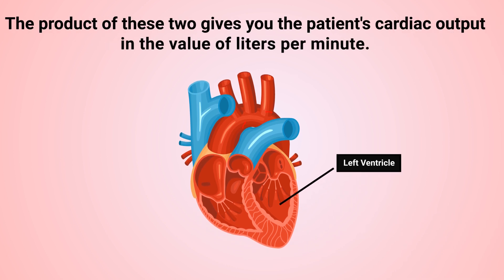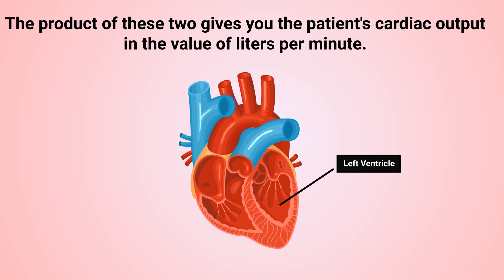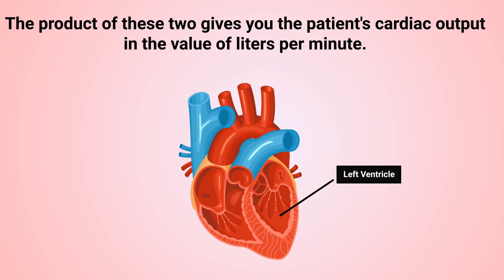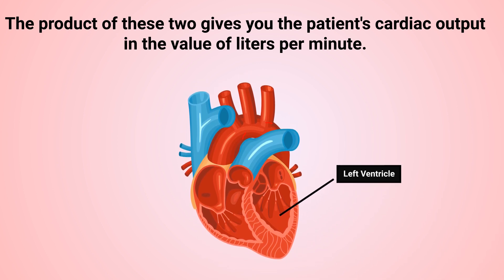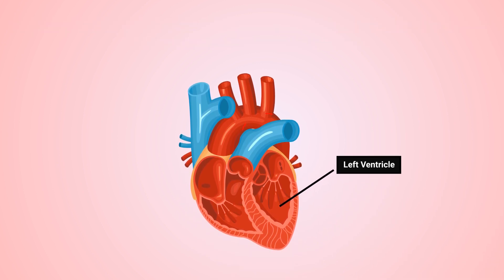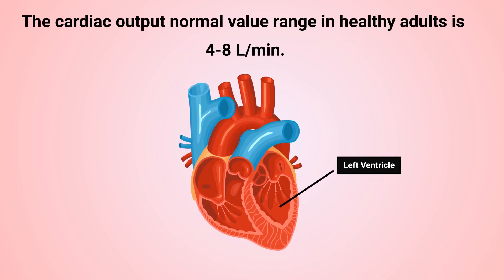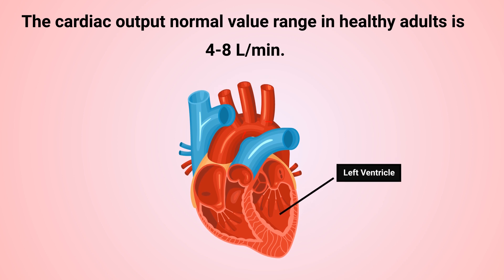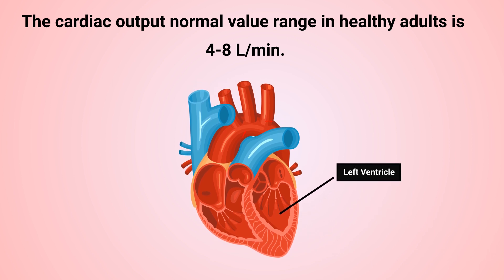The product of heart rate and stroke volume gives you the patient's cardiac output in the value of liters per minute. The normal value range for cardiac output in healthy adults is four to eight liters per minute.